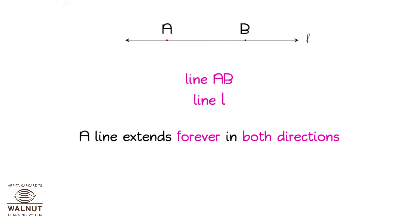We cannot find the length of a line. The points A and B only help us name the line. Line AB does not end at points A and B.